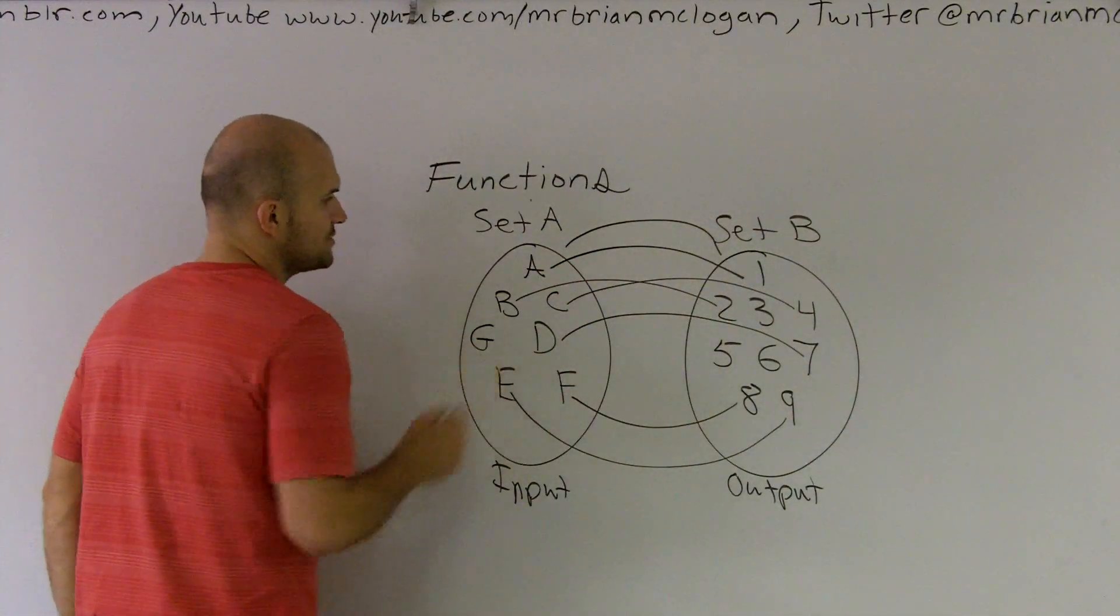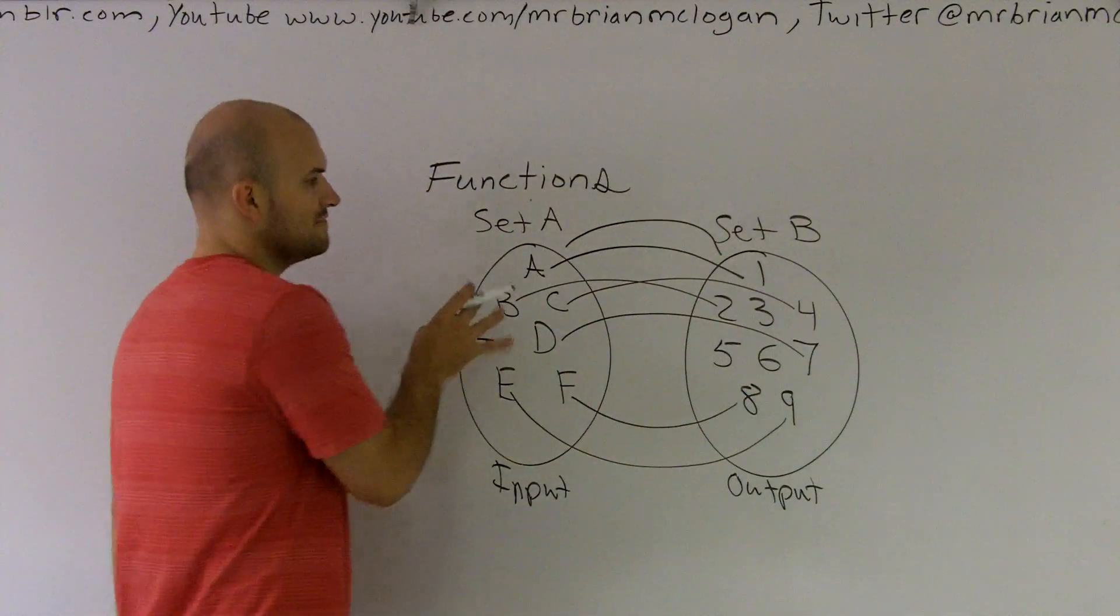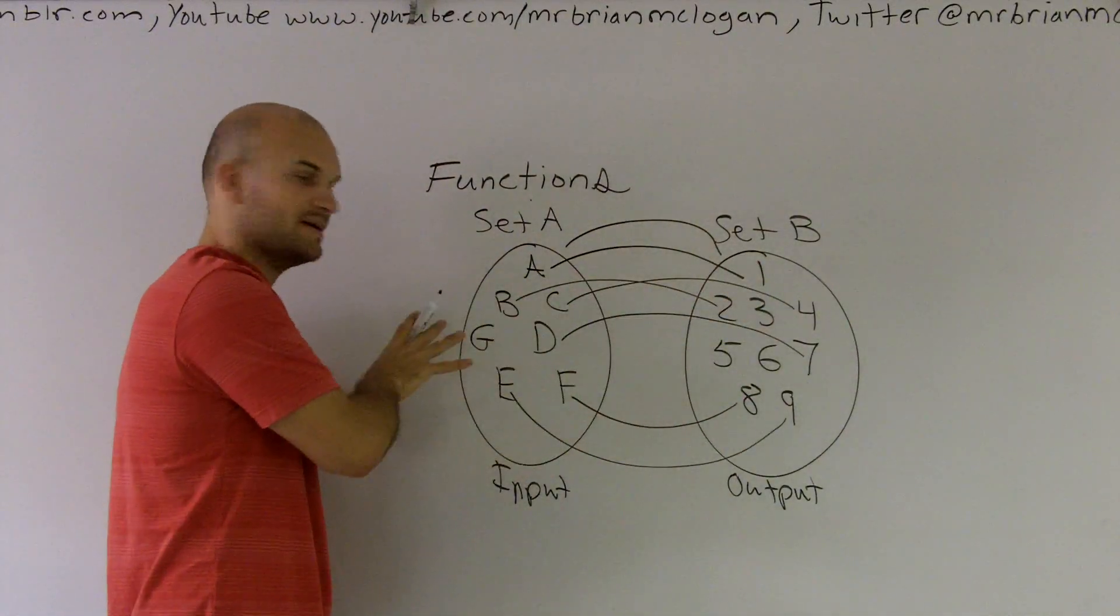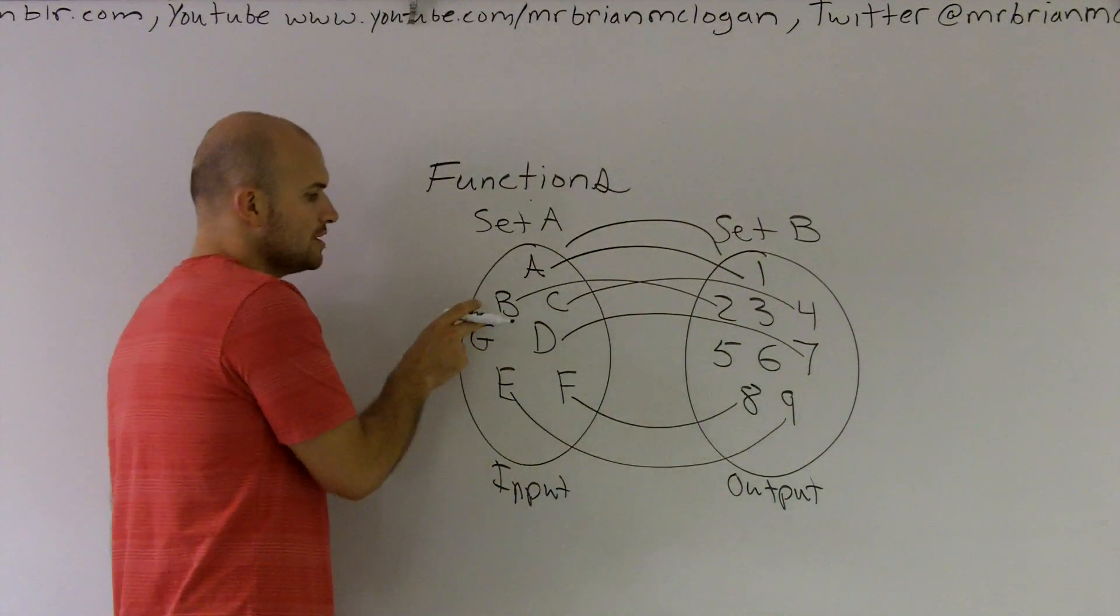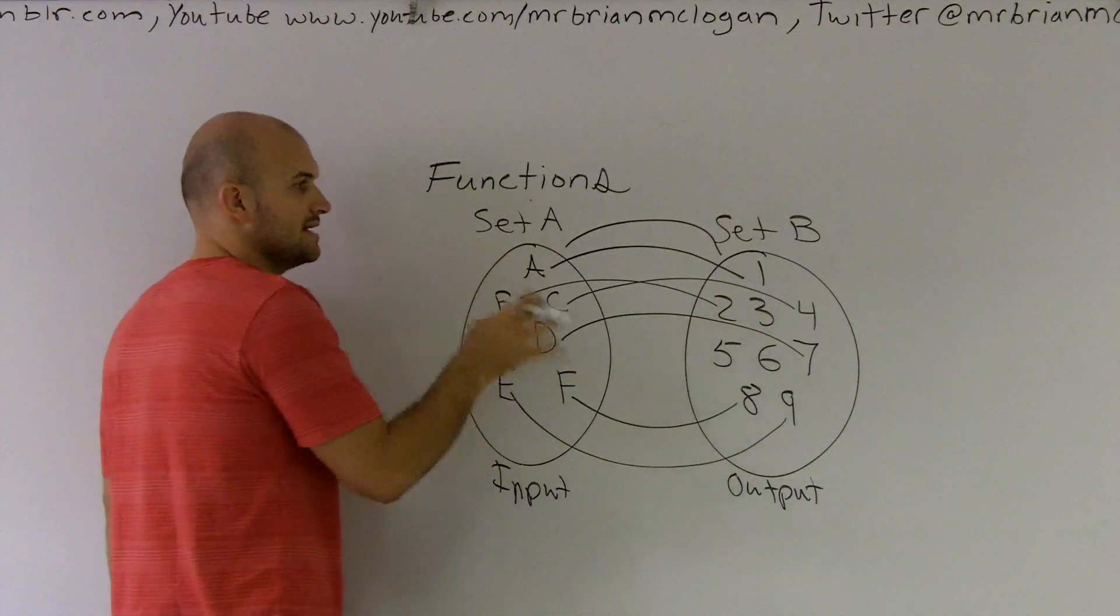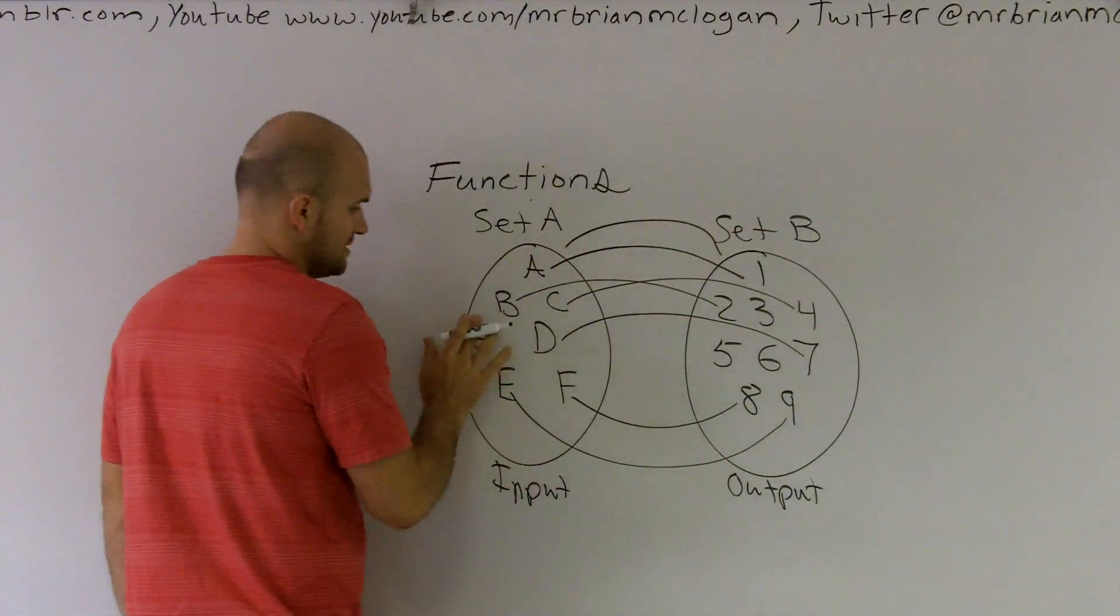However, if I create an extra element in Set A and have nothing for it to map to in Set B, this would not be considered a function relationship. You need to make sure that all elements in Set A, your input set, are related to your output set in Set B.